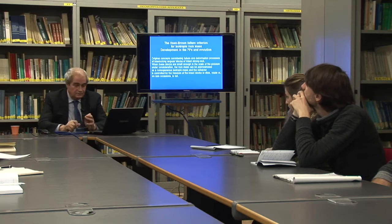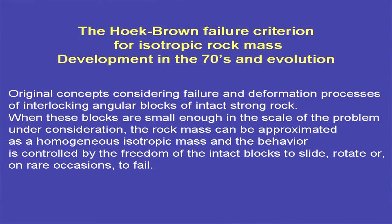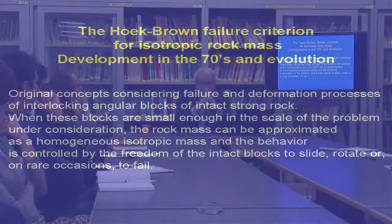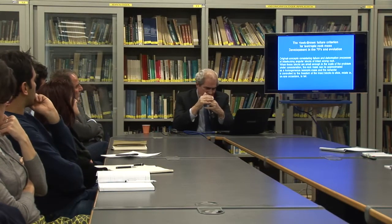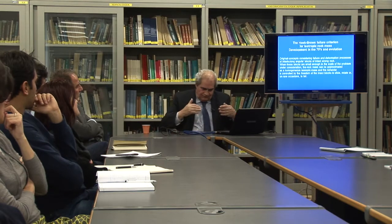The original concepts still consider the failure and deformation process to be based on the interlocking of angular blocks of intact strong rock. When these blocks are small enough relative to the scale of the problem, we consider the rock mass can be approximately treated as a homogeneous isotropic continuous mass, with behavior controlled by the freedom of the intact blocks to slide, rotate, or — rarely — to fail, because it is strong rock.